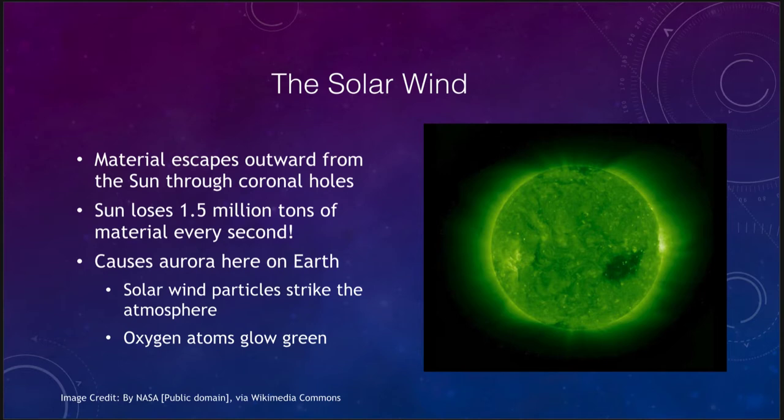The solar wind is material escaping outward through what we call coronal holes. We can see holes in the corona where the magnetic field lines kind of stream off into space and the material is not trapped to the Sun, so material can stream out of those coronal holes at the rate of about one and a half million tons of material every single second. So the Sun is constantly losing material. Doesn't matter, it can afford to lose that much mass every single second and its mass will essentially be unchanged over 10 billion years because of how massive it is.